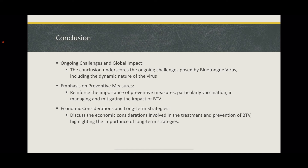There is a strong need for collaborative efforts among farmers, veterinarians, researchers, and policy makers to implement effective control strategies. Collaboration at local, national, and international levels is crucial for addressing the complex challenges associated with blue tongue virus. Economic considerations involving the treatment and prevention of BTV highlight the importance of long-term strategies. A proactive approach focusing on cost-effective vaccination programs, biosecurity measures, and sustainable practices is needed to safeguard the livestock industry.